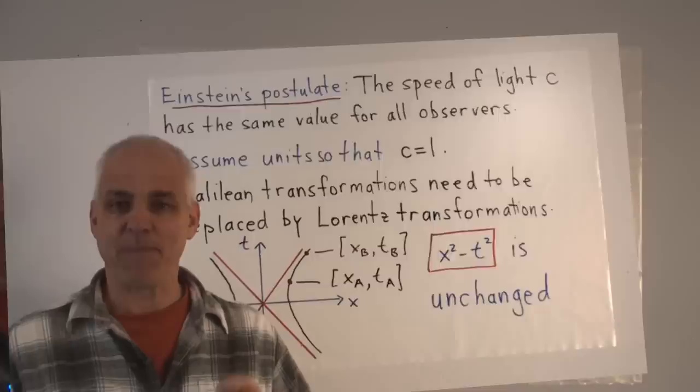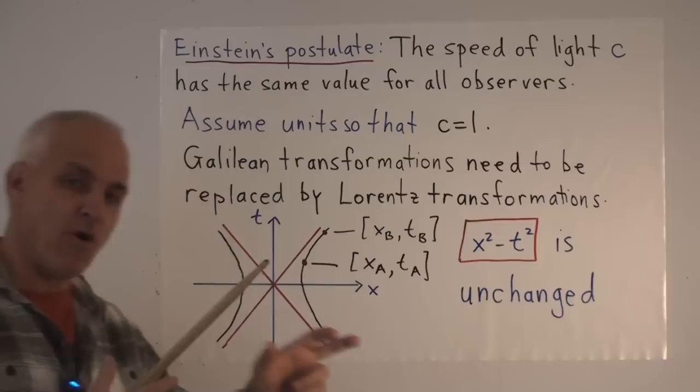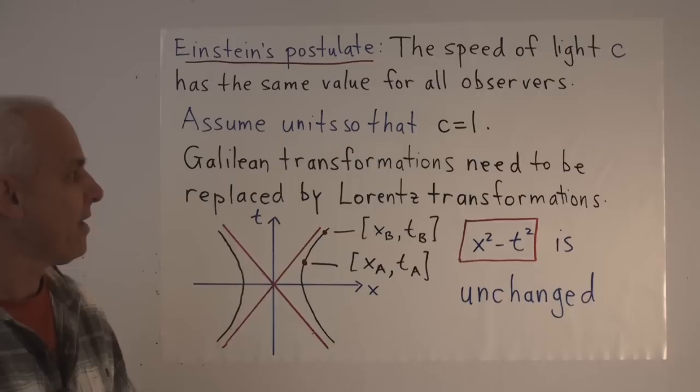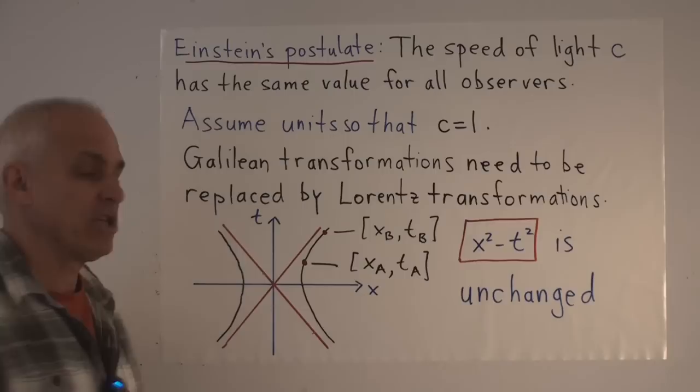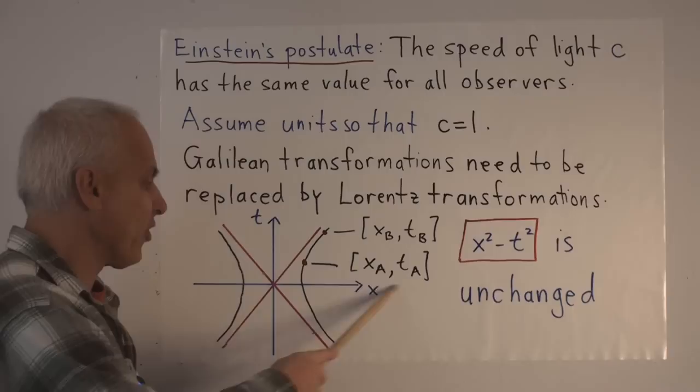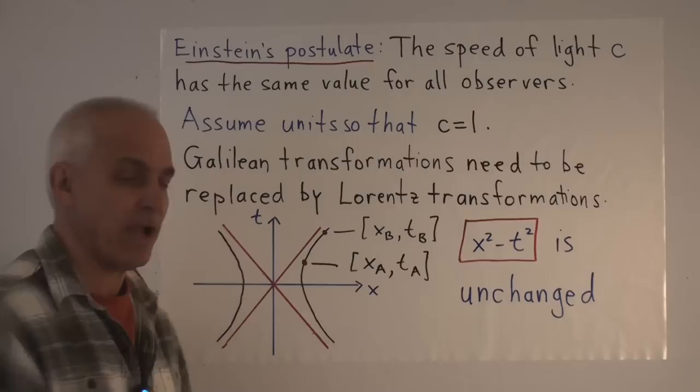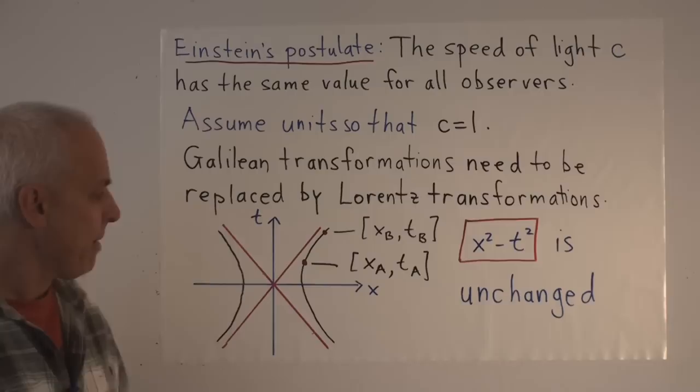Einstein based his reasoning on a postulate. He supposed that the speed of light was constant for all observers, which were moving with relative velocity with respect to each other. So we may assume that the speed of light is one if we choose our units of length and time correctly. As a consequence of this postulate, Einstein was able to make certain deductions. And amongst those deductions were the true change of coordinates between an observer A's time and position measurements and an observer B's time and position measurements.